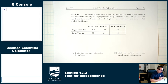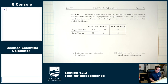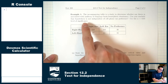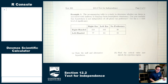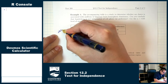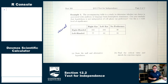Let's do a full example. Example one: the accompanying table is from a study to determine whether ear choice is associated with auditory or language brain hemispheric dominance — really just asking which side of your brain is more dominant, or whether you're right-handed or left-handed. The question is: can you conclude that handedness is not independent of cell phone ear preference? This original table is our observed counts, and we need to find the expected counts.